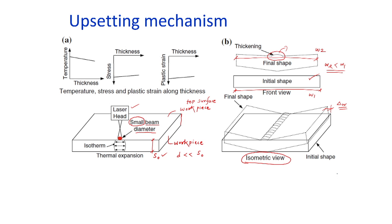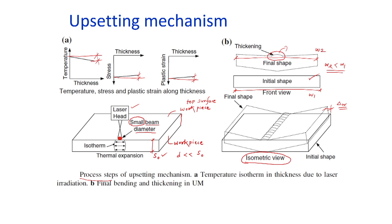Regarding the temperature, stress, and strain graphs in upsetting: there is not much difference between the top surface and bottom surface temperature, and the same holds for stresses and strains. To summarize the steps: we get a temperature isotherm in the thickness direction due to laser irradiation, and then final bending and thickening occurs in the upsetting mechanism.